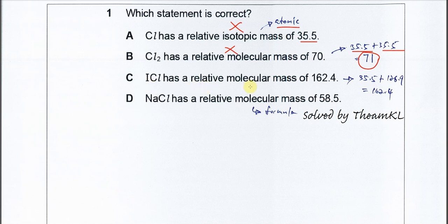Option C: ICl has a relative molecular mass of 162.4. We try to sum up using the relative atomic mass: 35.5 plus 126.9, which equals 162.4. So C is correct.